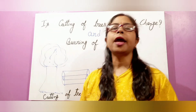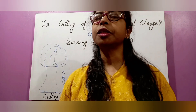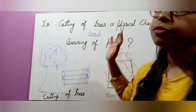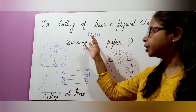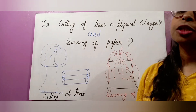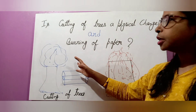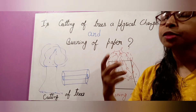Welcome children in Active Education Classes. Just like you have seen in the thumbnail, today the topic is: Is cutting of a tree a physical change, and burning of paper — what type of change? Today we will discuss about cutting of trees and burning of paper, and which type of change each represents.